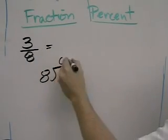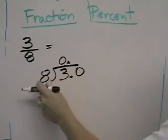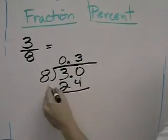8 doesn't go into 3, so I add a decimal and a 0. 8 goes into 30, 3 times, that's 24 with 6 left over.